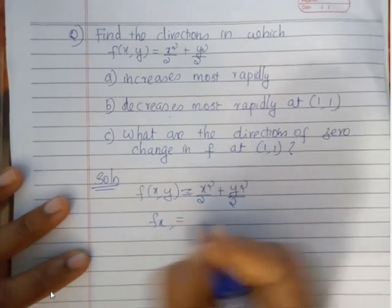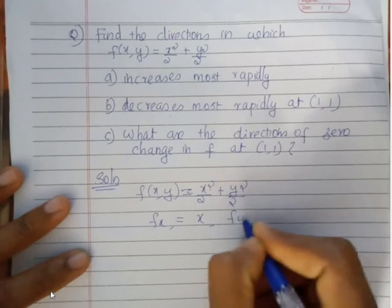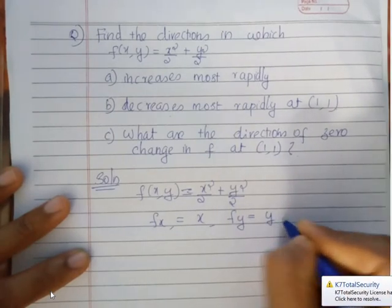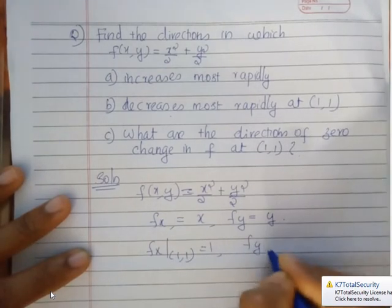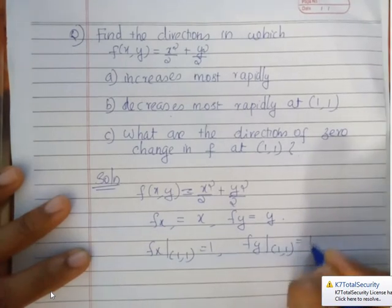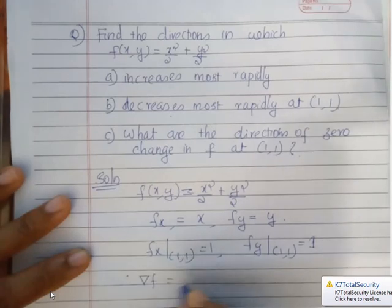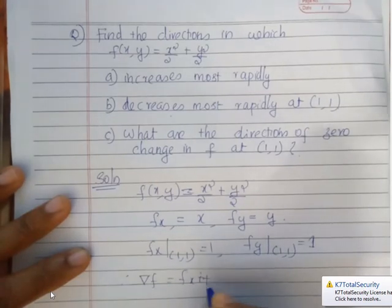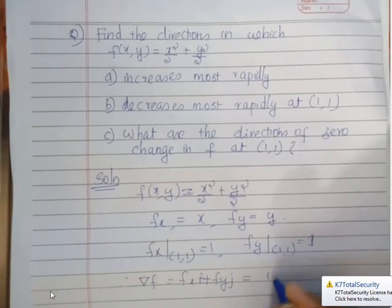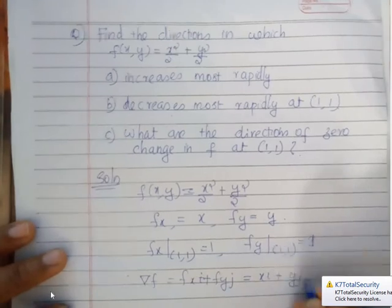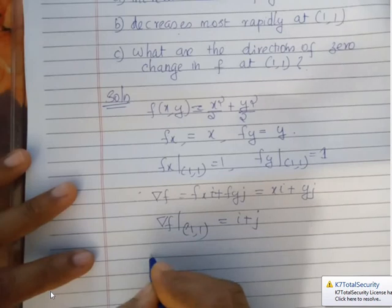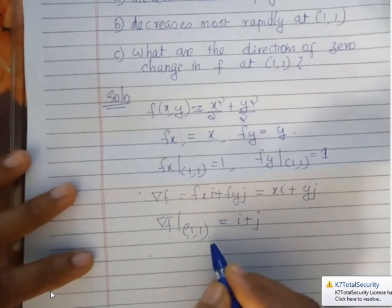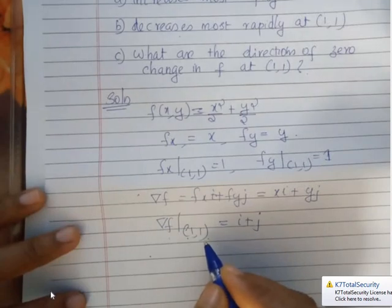We find the partial derivatives: f_x = 2x/2 = x, and f_y = 2y/2 = y. So f_x at (1,1) = 1 and f_y at (1,1) = 1. Therefore, ∇f = f_x i + f_y j = xi + yj. So ∇f at point (1,1) equals i + j, and the direction is given by this vector.